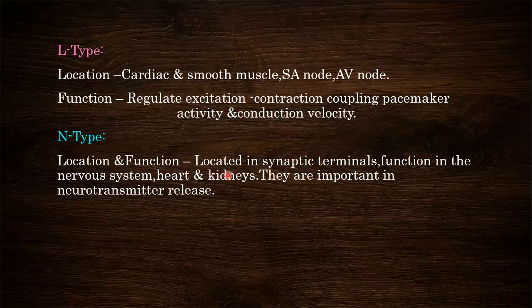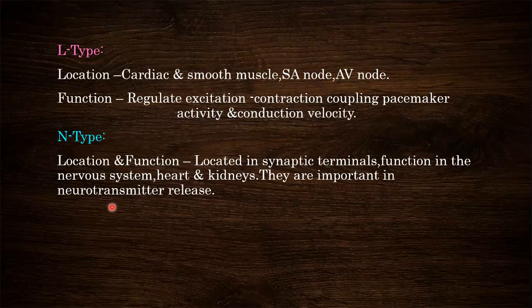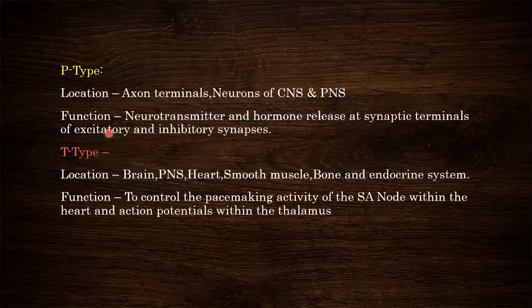The second type of calcium channels are N type. They are located in synaptic terminals and function in the nervous system. They also function in the heart and kidneys, and are very important in neurotransmitter release.